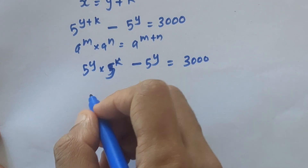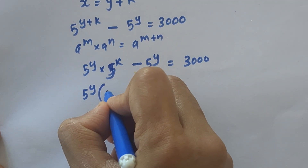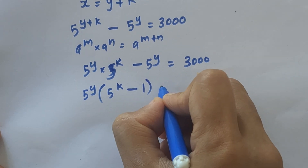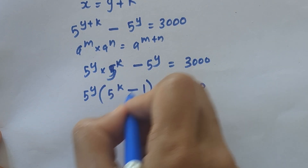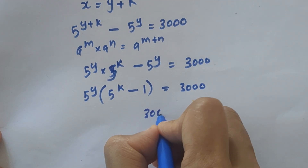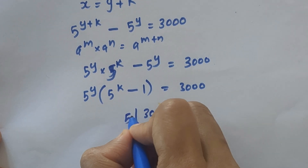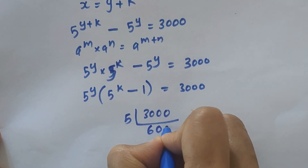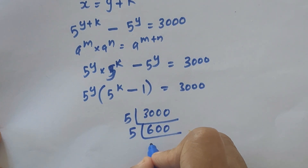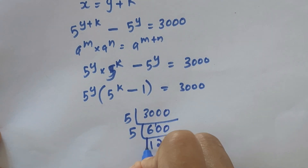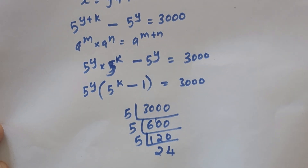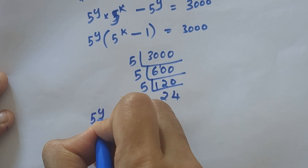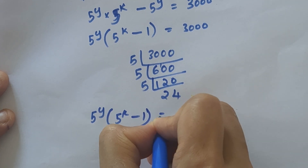Now 5 raised to Y is common, so we can take it outside the bracket: 5 raised to Y into (5 raised to K minus 1) equal to 3000. Let's factorize 3000 using prime factorization — we get 5 cubed times 24. Since 24 is not a multiple of 5, we stop there. So we write: 5 raised to Y into (5 raised to K minus 1) equal to 5 cubed into 24.